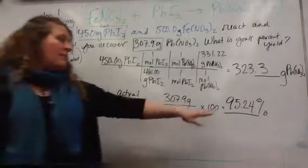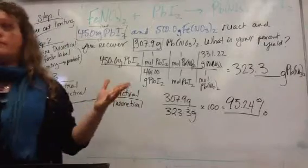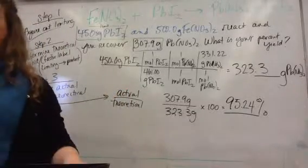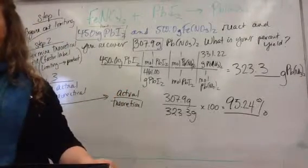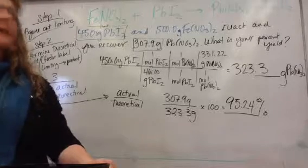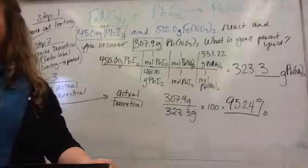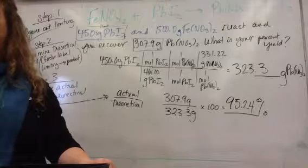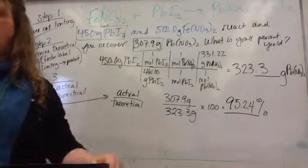I could give you your actual and your percent yield and ask you what your theoretical was. And then you're just solving a three-part equation. So you could possibly, if we get that problem, we could possibly do like three factorial? Which is why you only have one of these on your test.